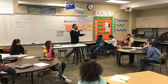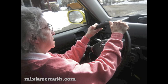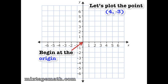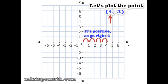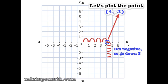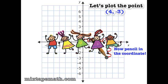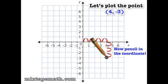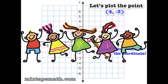Let's break it down again before we start high-fiving, and take it real slow like a grandma driving. Begin at the origin, look at the first coordinate — go right if it's positive, and left if it's negative. Now from that location, check out the second coordinate — go up if it's positive, and down if it's negative. Now pencil in your coordinate, throw your hands up in the sky.